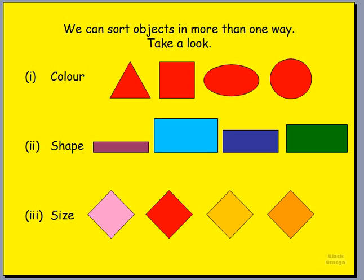Hello boys and girls, this is Mr. G coming to you with another video on sorting and patterns. Earlier we spoke about sorting objects out and separating them into different groups based on their attributes. Attributes are characteristics — words that we use to describe shapes. We describe and separate them based on their color, shape, and size. Here we are going to look at how we can sort objects out in more than one way.